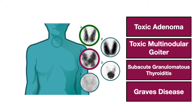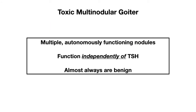Let's now move on to image C. The answer here is toxic multinodular goiter, where you get multiple autonomously functioning nodules that function independently of TSH. Unlike what the name suggests, these nodules are typically benign in nature. The thing to look out for on a thyroid scan is a heterogeneous, patchy uptake of the tracer — this is different from Graves' disease, where the entire gland is involved and you get a more homogeneous pattern.